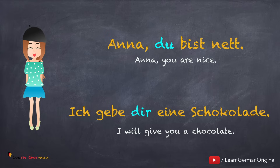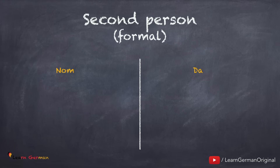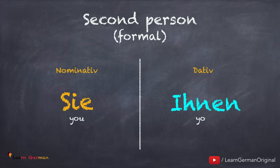You must have noticed that the sentences are similar in all the cases. We have used the same sentences because it's easier to identify what's the nominative and the accusative — this helps in identifying the dative personal pronoun. Let's move on to second person formal: in Nominativ it's Sie, and in dative it changes to Ihnen.